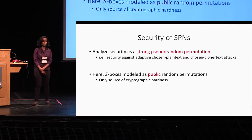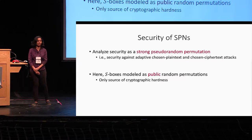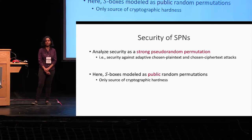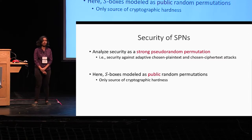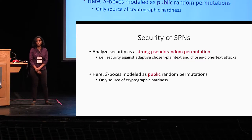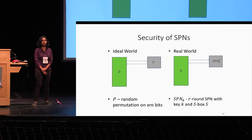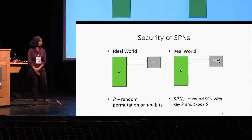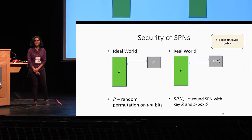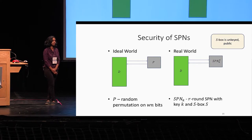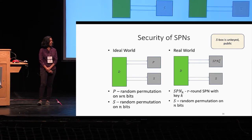To analyze security of SPNs, we consider the indistinguishability setting, and in particular analyze security as a strong pseudo-random permutation, capturing security against adaptive chosen plaintext and chosen ciphertext attacks. The S-boxes are modeled as public random permutations and are the only source of cryptographic hardness. We consider a distinguisher D where, in the real world, D has access to an SPN under key K with access to an S-box, and in the ideal world has access to a random permutation on WN-bit inputs.